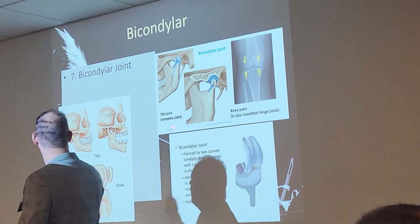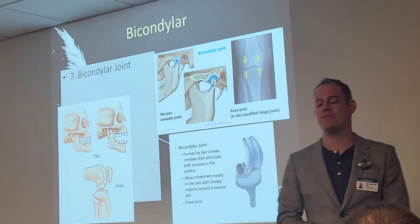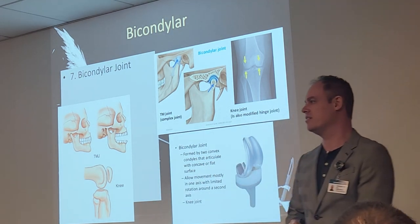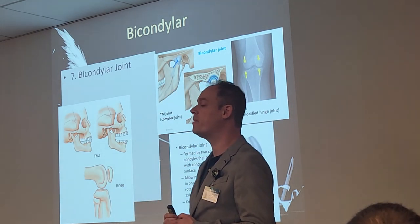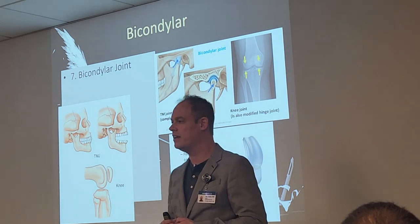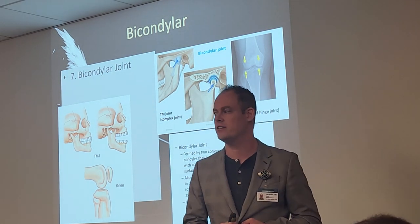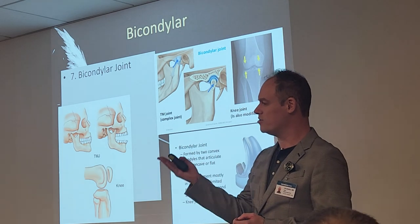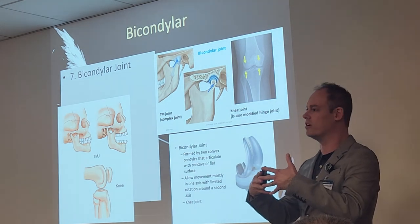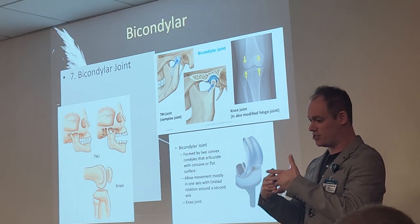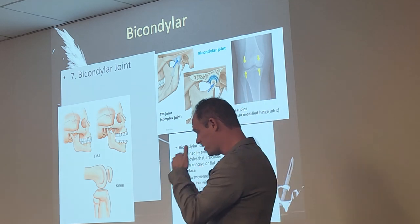Speaking of TMJs — the temporomandibular joint is considered a bicondylar joint. The knee can also overlap into that bicondylar category. The main one for bicondylar is the TMJ — that is the mandible fitting into the temporal bone. Thus: temporomandibular joint. You'll find that most joint names are the union of the two bone names combined — they're almost always classified by the two bone names.